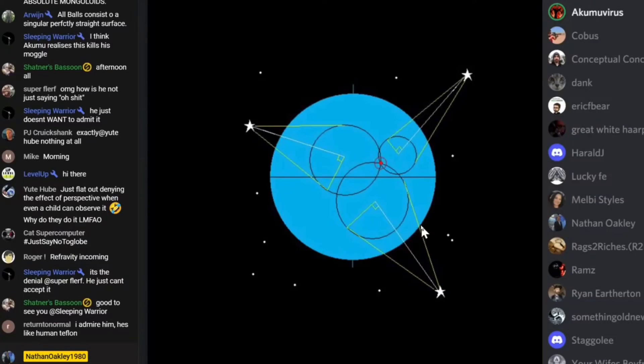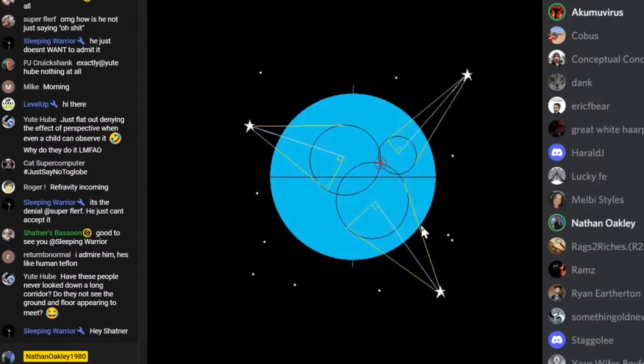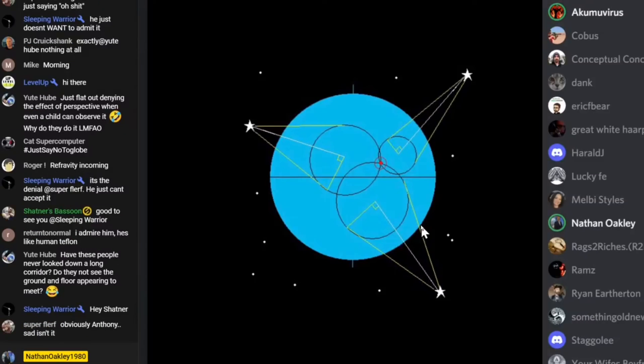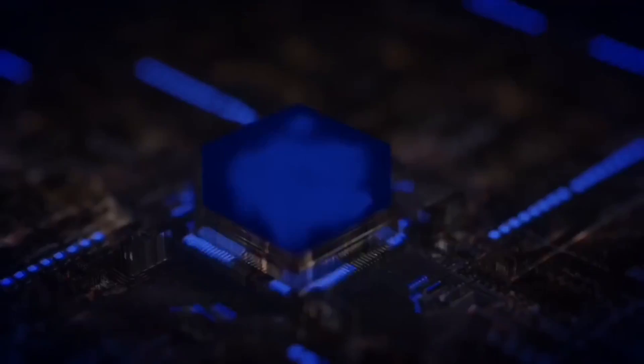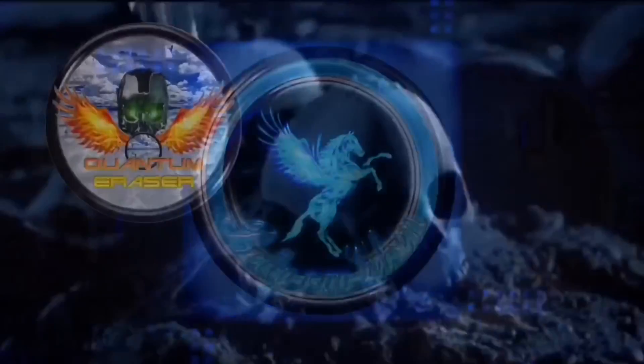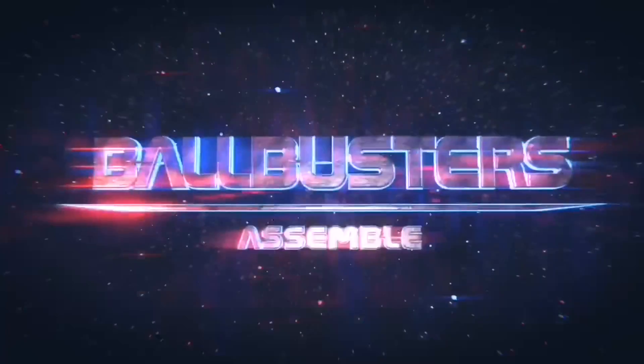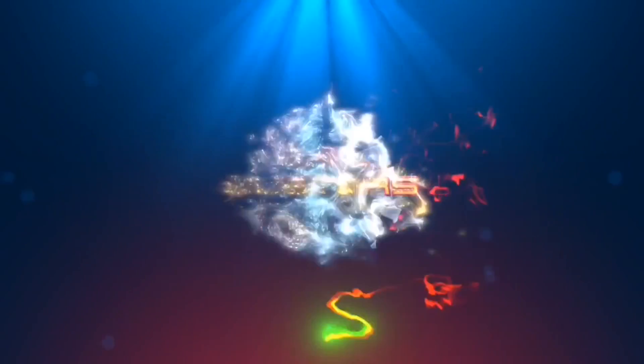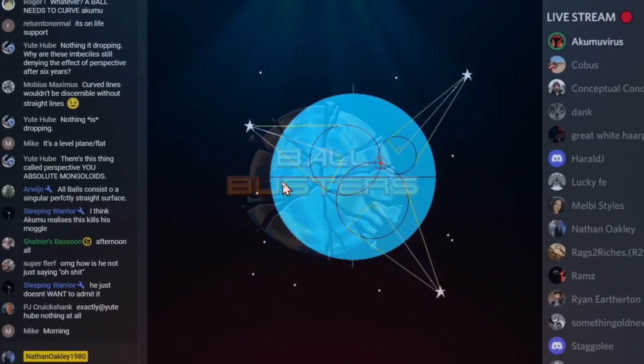Those stars are not dealing with the horizon and you can't make straight on a globe. You can't make straight on a curved surface, that's correct. Welcome to Flat Earth Nathan Oakley 1980.